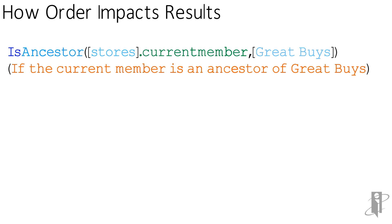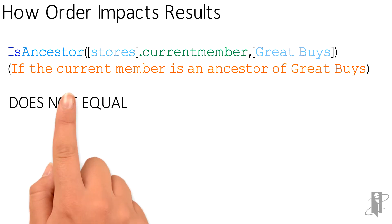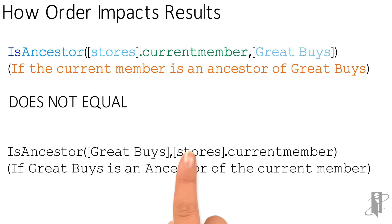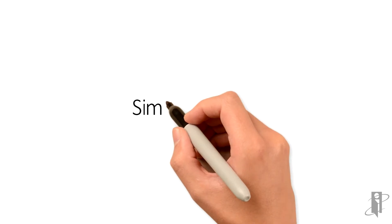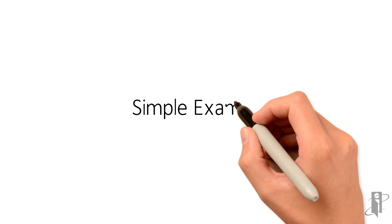...that means: if the current member is an ancestor of Great Buys. That does not equal isAncestor of Great Buys and Stores.currentMember, which would say: if Great Buys is an ancestor of the current member. So let's look at a simple example.